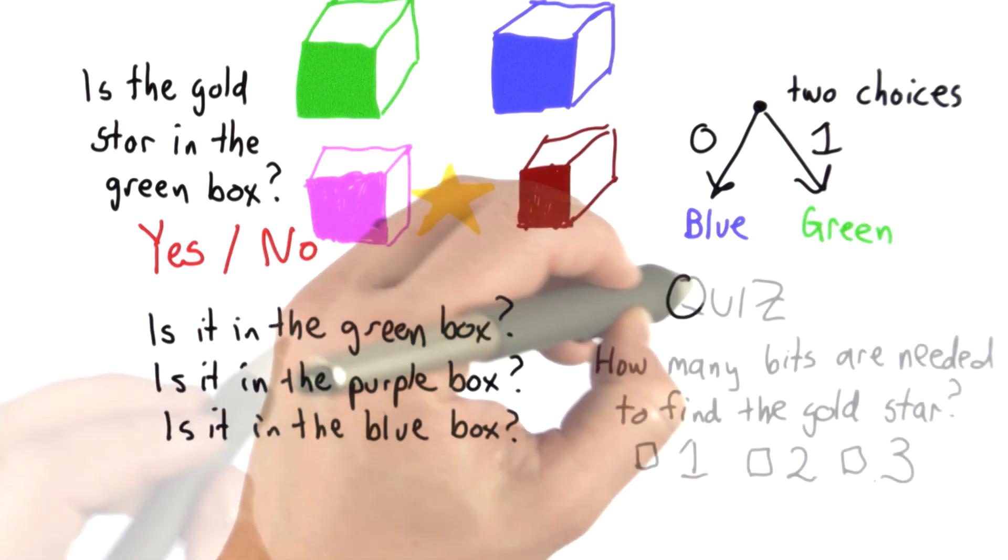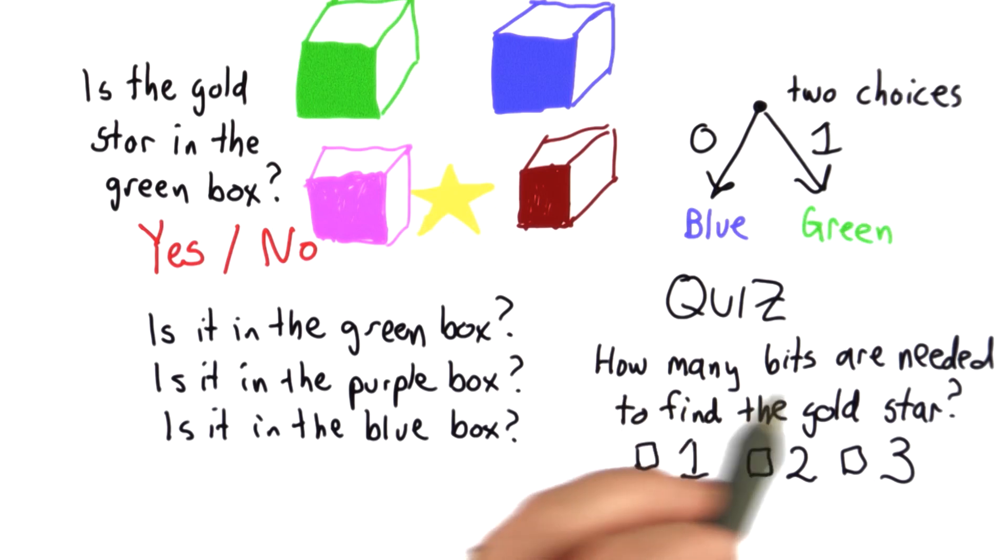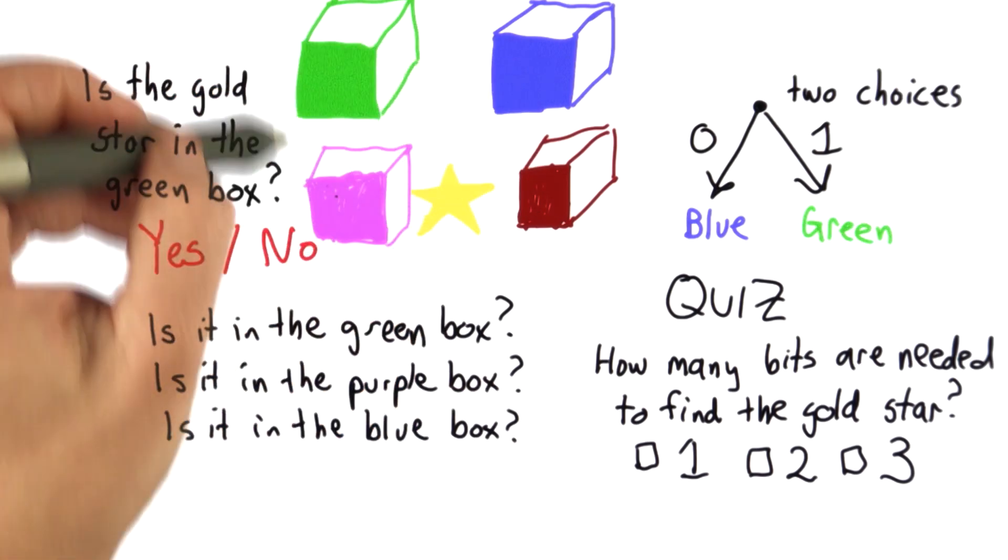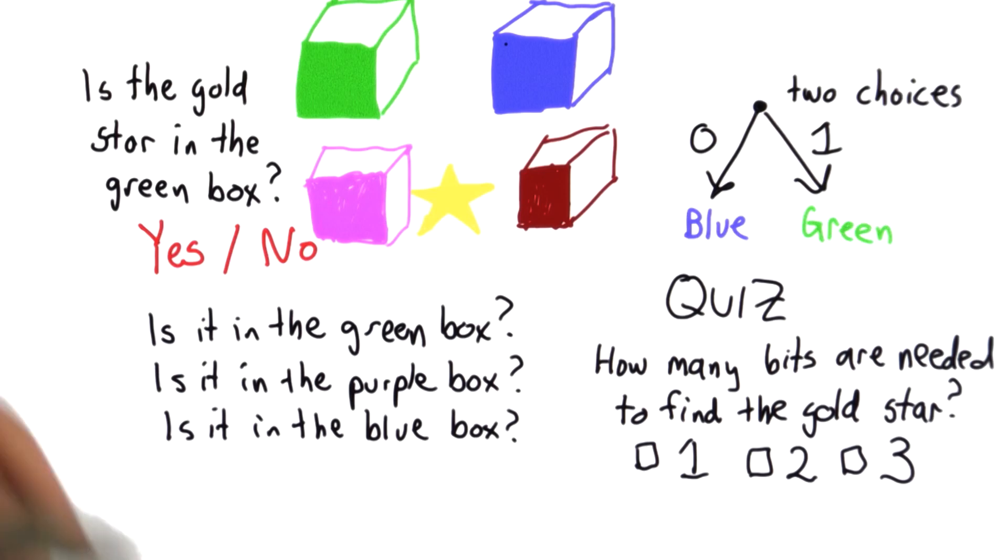Can we do better? So the question is, how many bits do we need to find the gold star? And remember, each bit is the answer to one yes or no question. And we have four possible boxes, and the gold star could be in any one of those four.